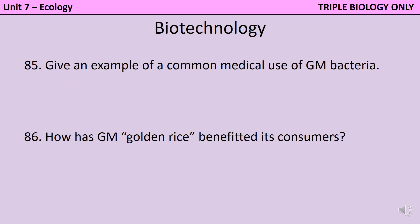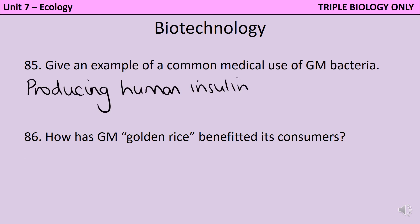Genetically modified bacteria are commonly used to produce large amounts of human insulin to treat people with type 1 diabetes. The bacteria are transformed with a plasmid that contains the human insulin gene, meaning that despite being bacteria they're able to make the exact same protein that a human pancreas would make — a very cheap and easy way to make a lot of insulin. Golden rice is a variety of rice engineered to contain three genes which allow it to produce beta-carotene, a molecule your body can turn into vitamin A, meaning people can avoid vitamin A deficiency by eating it.